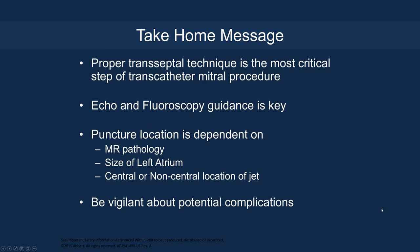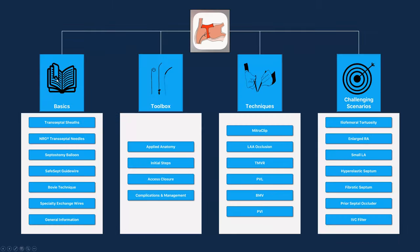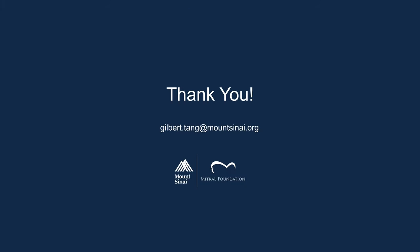In summary, proper transeptal technique is the most critical step of a transeptal mitral procedure. Use echo and fluoroscopic guidance. Puncture location depends on MR pathology, left atrial size, whether the jet is central or non-central, and the device being used. Be vigilant about potential complications. A transeptal app developed with colleagues at Mount Sinai covers anatomy basics, toolbox techniques, and challenging scenarios — available for iOS and Android. I encourage you to download it to learn the fundamentals developed for our fellows and educational initiatives. Thank you very much.